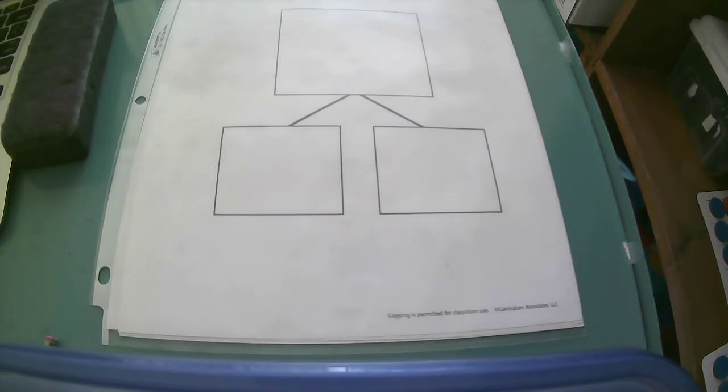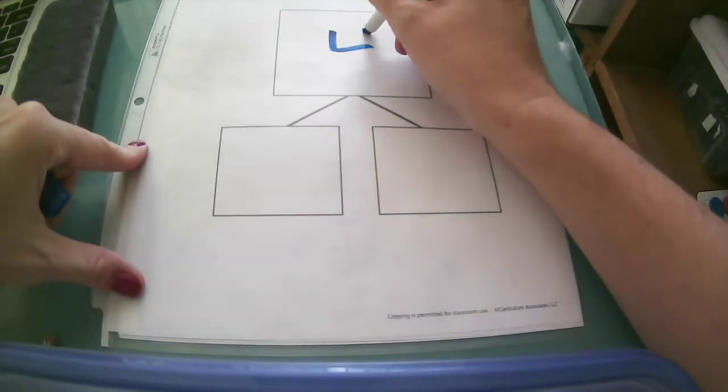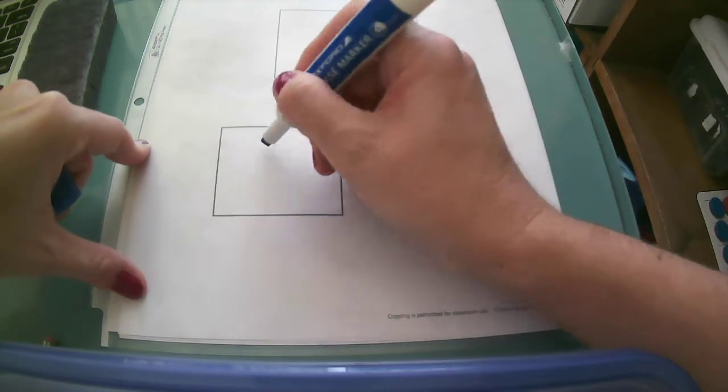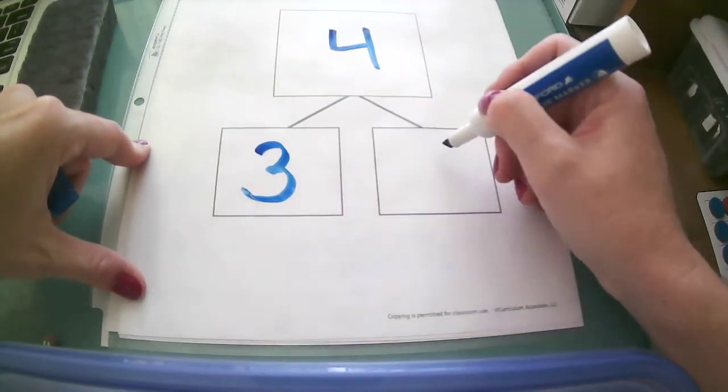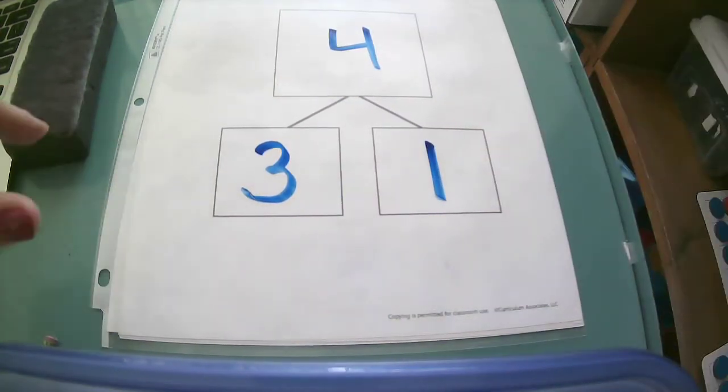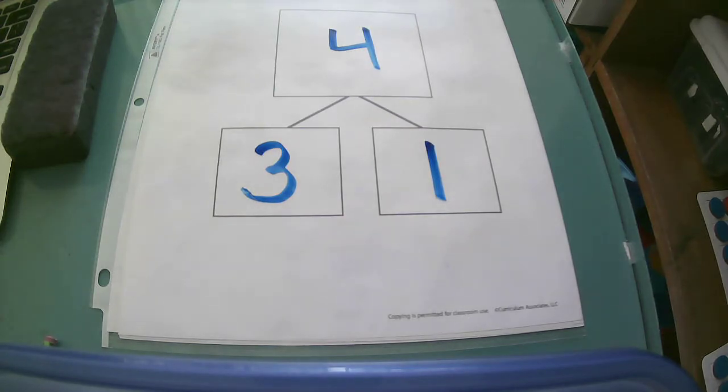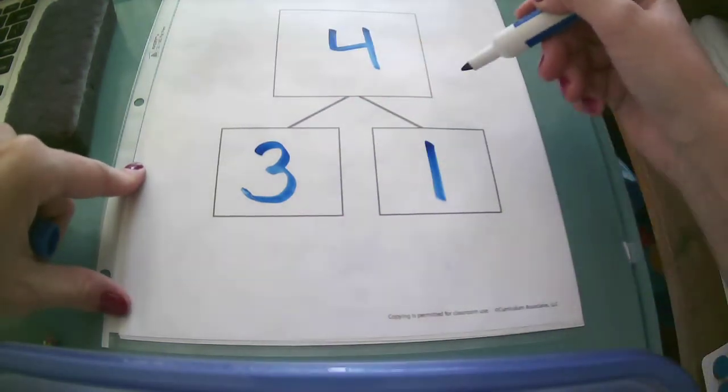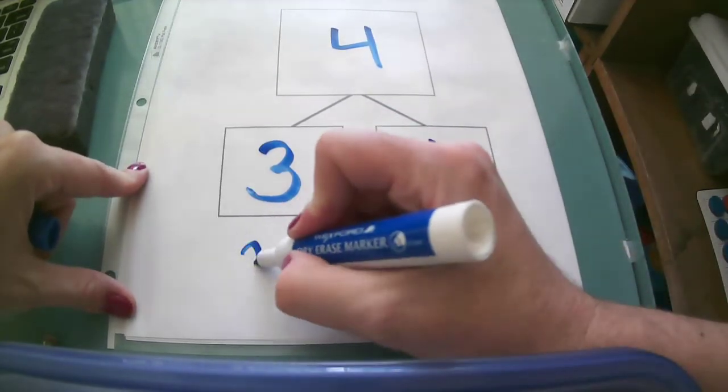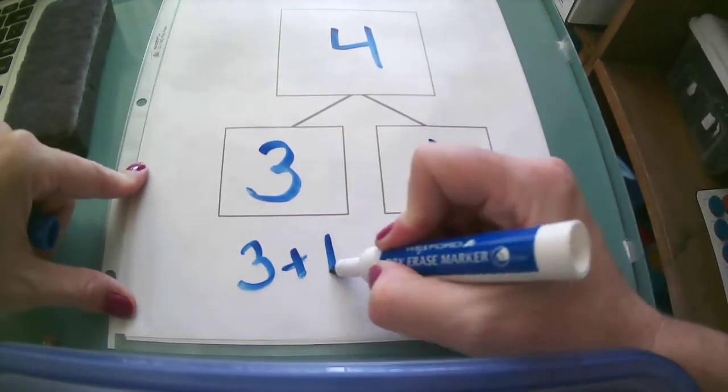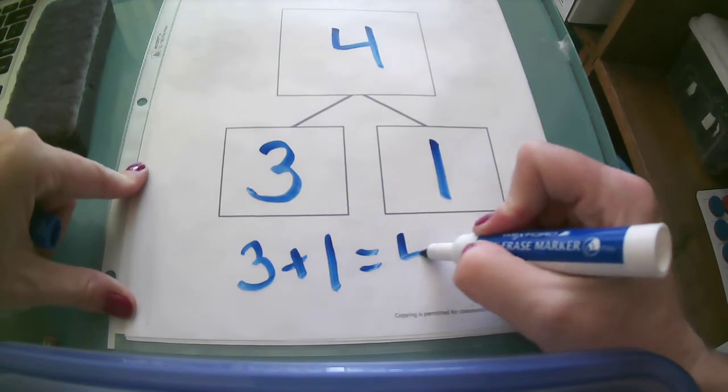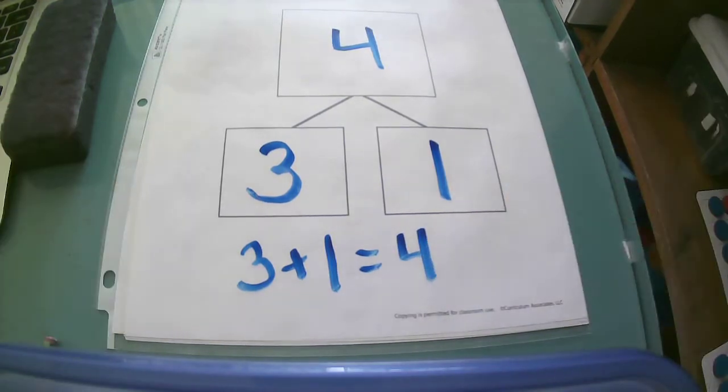Let's take a look at this number bond first. If my whole is 4, and if I have a part of 3 and a part 1, I can create a number sentence with this using the equal sign. Looking at this number bond, I could say 3 plus 1 equals 4, or 3 and 1 together mean the same as 4.